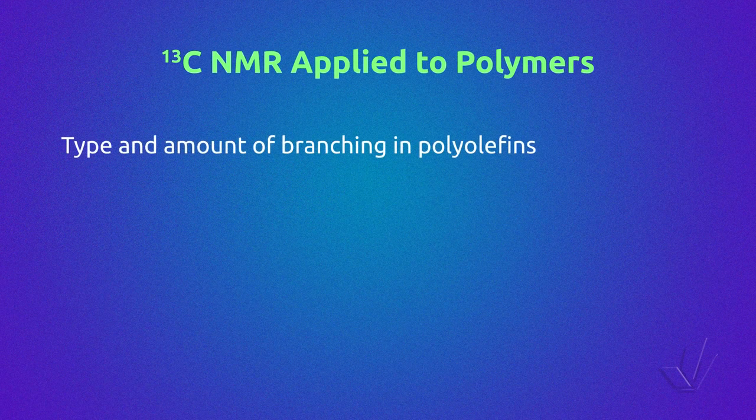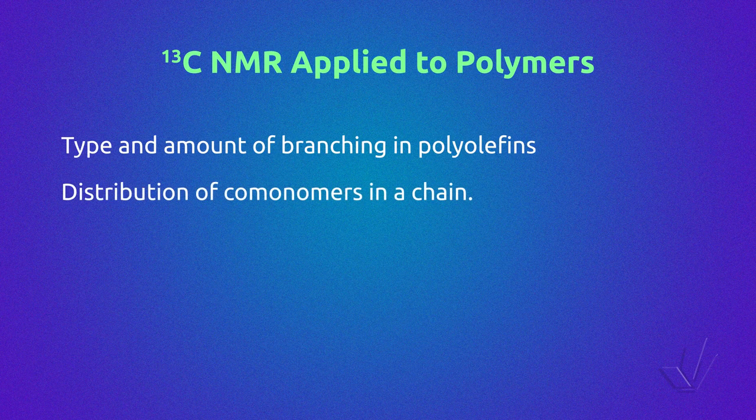Although this is a disadvantage, carbon-13 NMR is very important for the study of polymers because it allows obtaining data that cannot be seen by proton NMR, especially in polymers that do not contain functional groups or different kinds of carbons in the same molecule. For example, the type and amount of branching in polyolefins, distribution of comonomers in a chain, and comonomer sequences that let you know if a copolymer is block, random, or alternated.